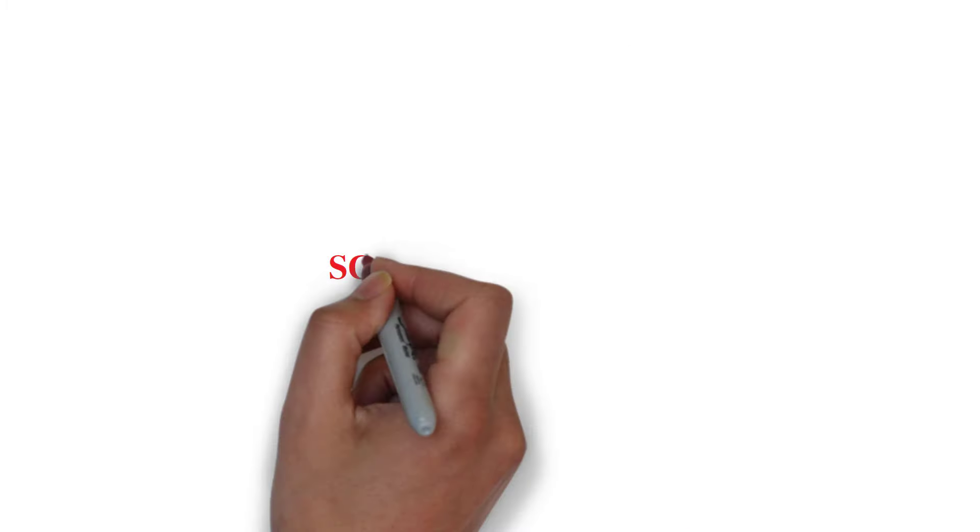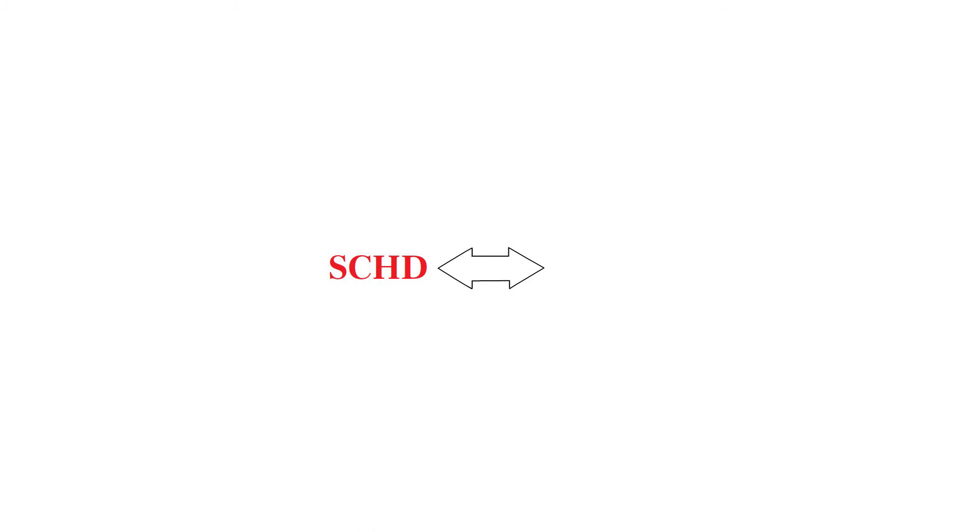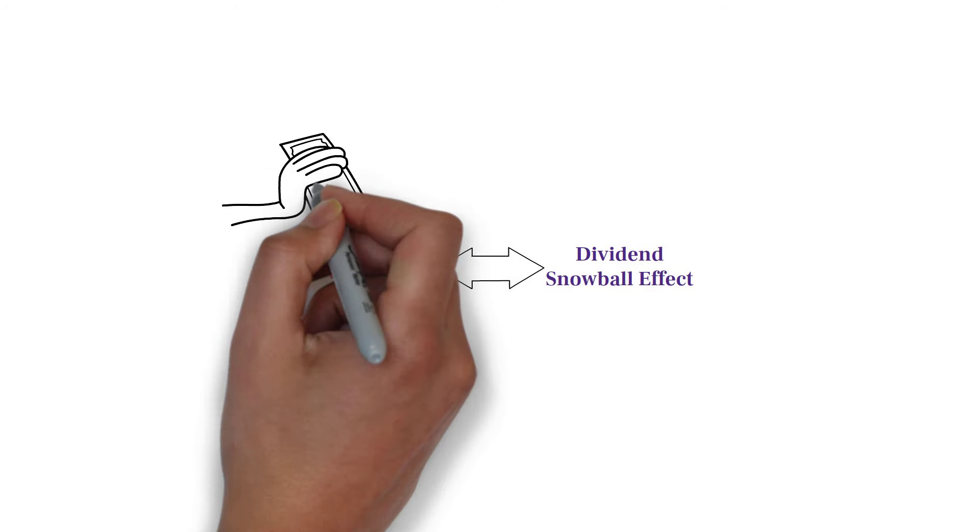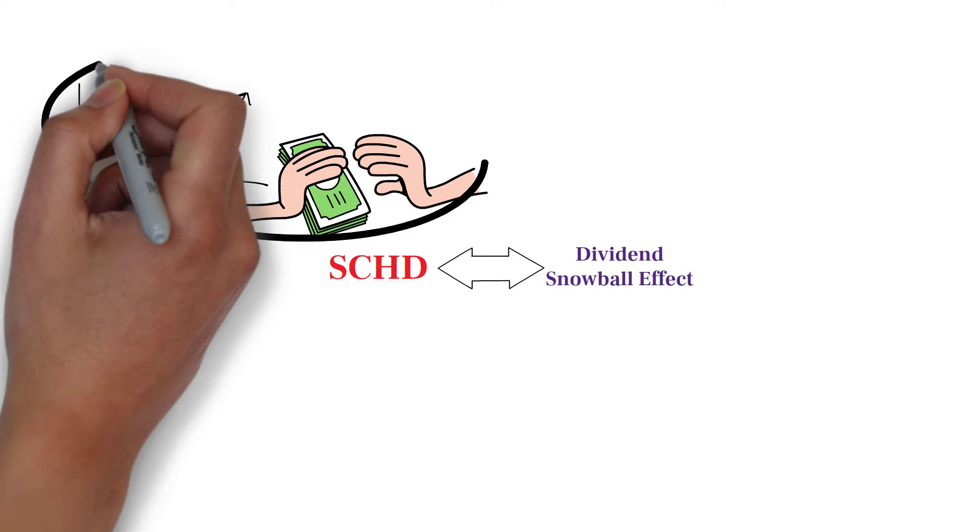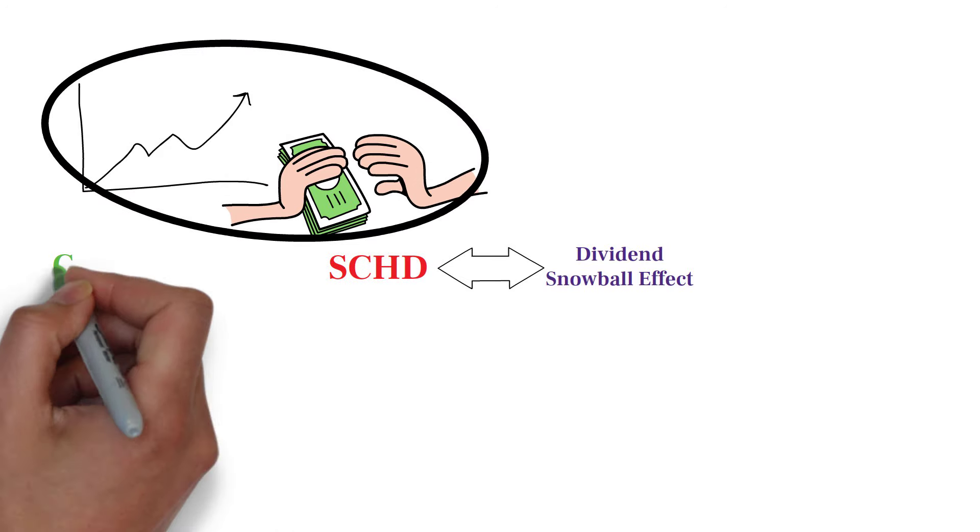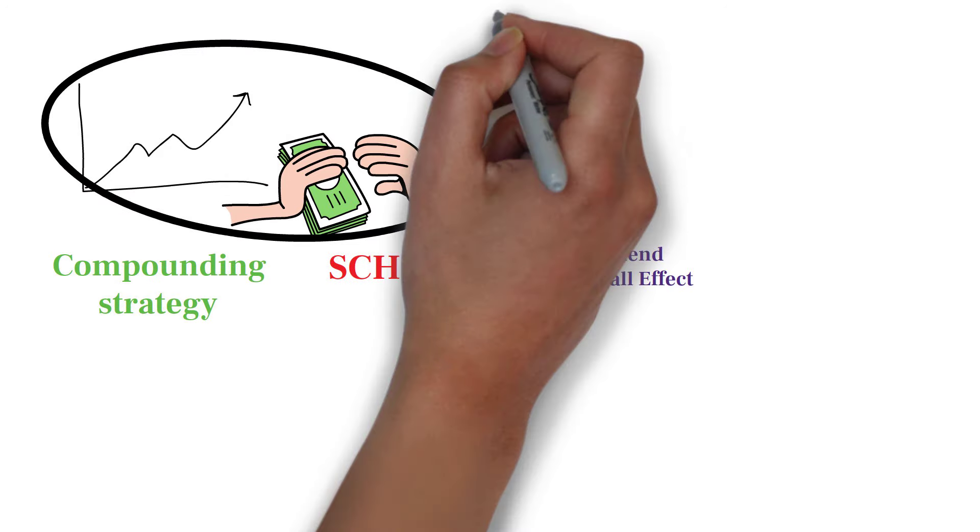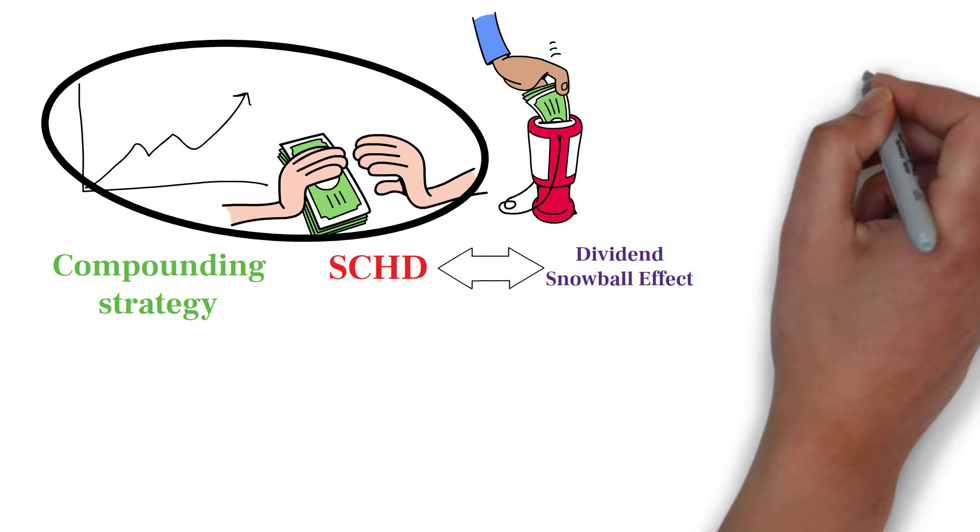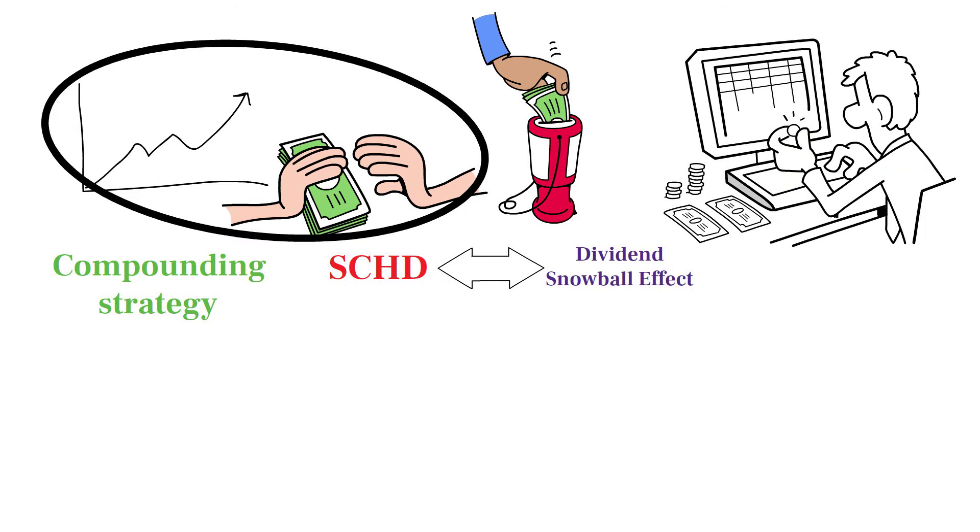SCHD is particularly well-suited for the dividend snowball effect due to its focus on companies with a solid history of paying and growing dividends. The ETF's high yield and consistent dividend growth provide a strong foundation for this compounding strategy. By reinvesting dividends from SCHD, you can create a steadily increasing income stream that supports long-term wealth creation and financial independence.